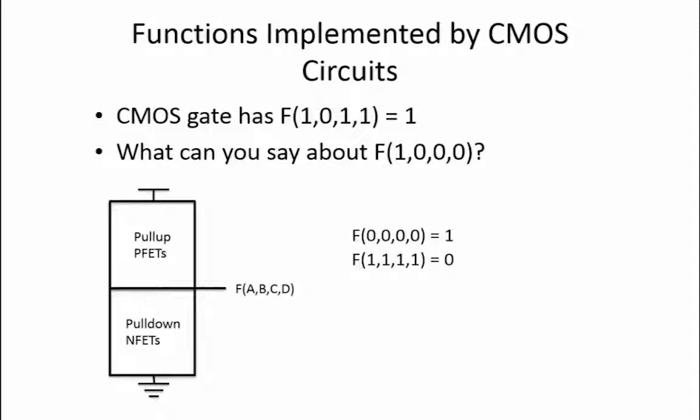If we are told that f(1,0,1,1) equals 1, and we want to find out what f(1,0,0,0) is, we notice that the difference between the first set of inputs and the second is that the third and fourth inputs have been changed from 1 to 0, while the others remain unchanged.